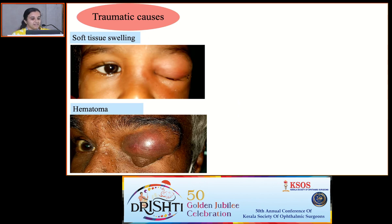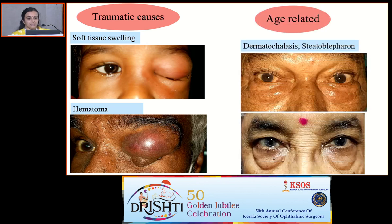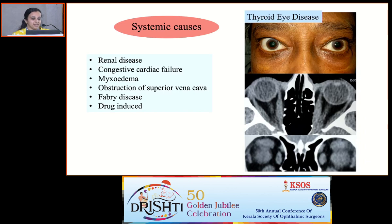In case of trauma, ask a detailed history regarding the mode of injury, type of injury, and time of injury. Whenever an aged patient presents with a baggy lid, think about dermatochalasis or fat prolapse due to thinning of connective tissues or loss of elasticity of skin. Sometimes it can also be a manifestation of underlying systemic conditions.